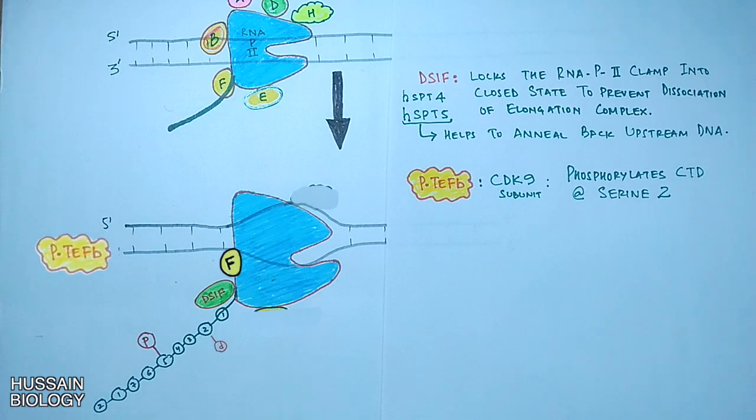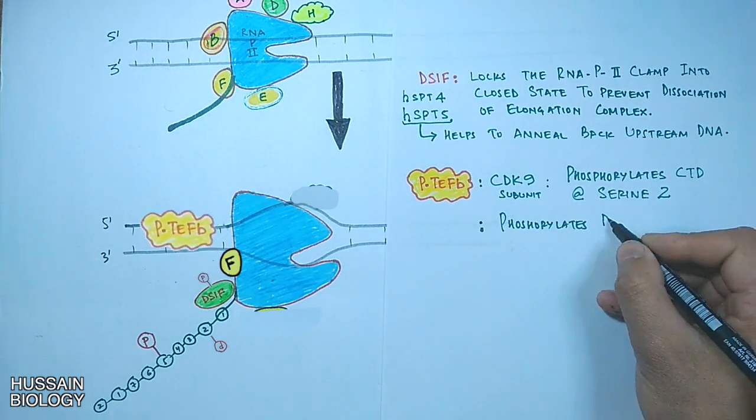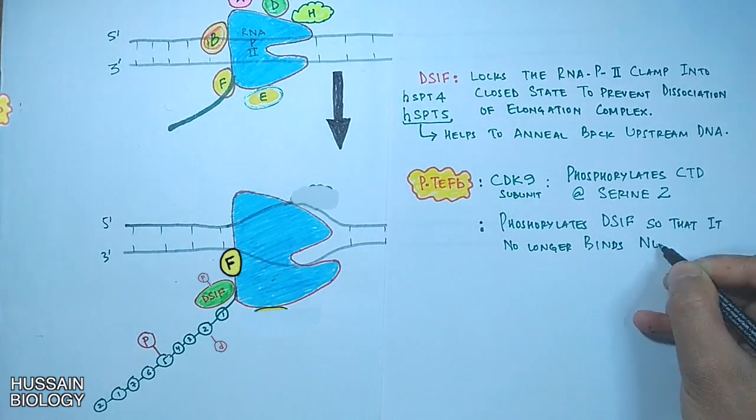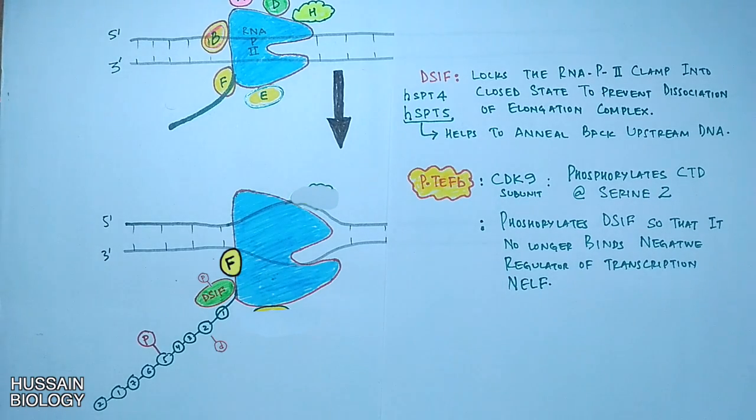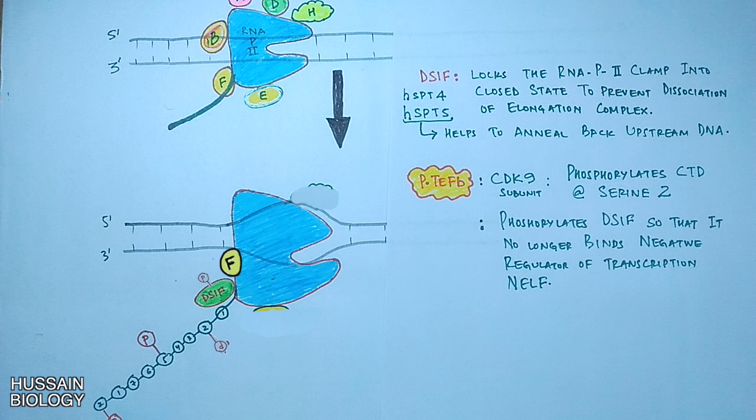This P-TEFb also phosphorylates the DSIF elongation factor so that it no longer binds NELF, the negative regulator of transcription. So we saw here two kinds of phosphorylation.